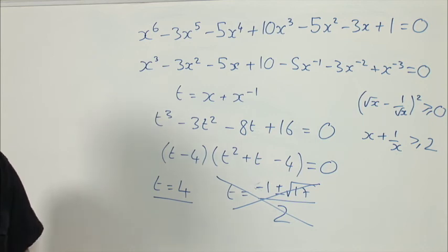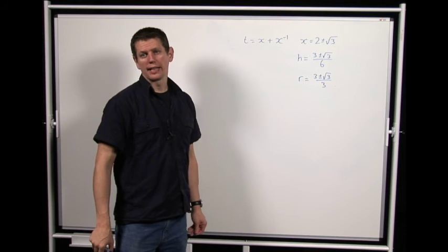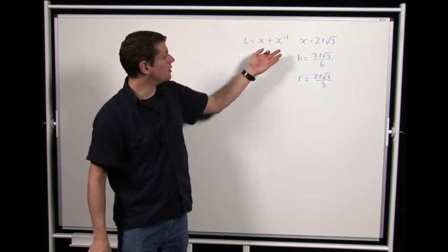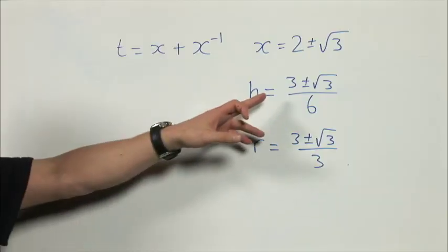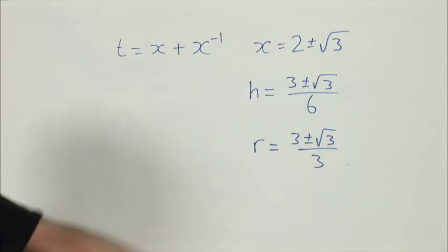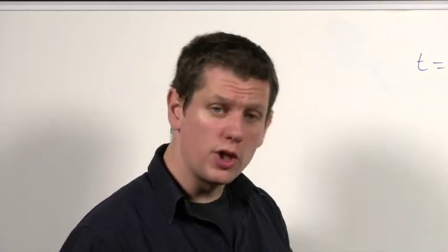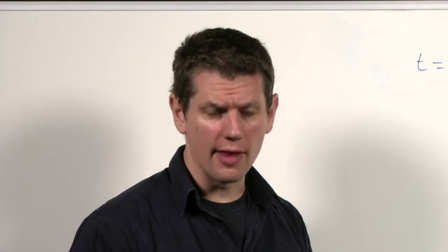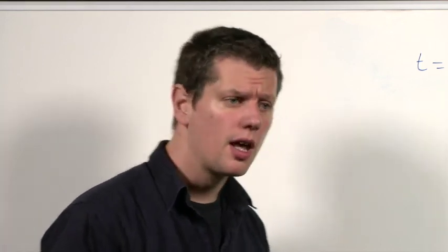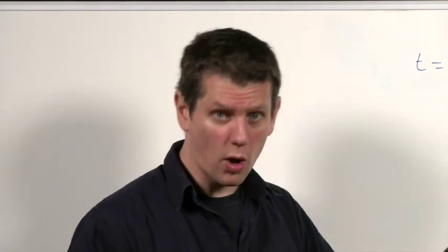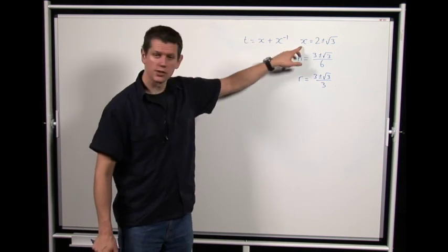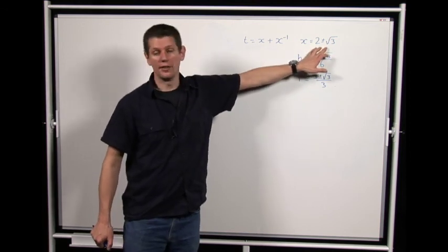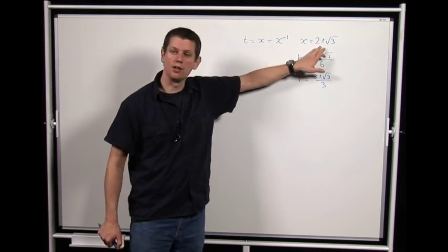Substituting back into the original equations and simplifying, we find x = 2 ± √3, h = (3 ± √3)/6, and r = (3 ± √3)/3. We should check these work by substituting back into the original equations, since we squared along the way which might have introduced spurious solutions. Note there is really only one solution: one value of x corresponds to the small cylinder being first with scale factor > 1, and the other to the large cylinder being first with scale factor < 1.